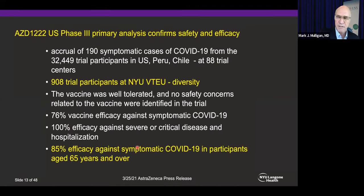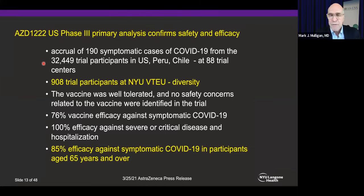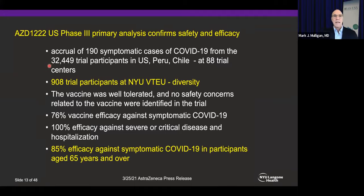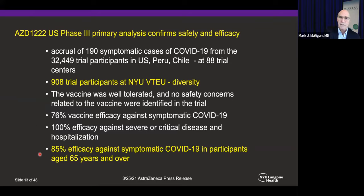Moderna results are almost identical. For AstraZeneca — another study we participated in — there were 190 cases in 32,000 participants at 88 trial centers. The vaccine was well tolerated with no safety signals in this trial of 32,000. There was 76% efficacy against symptomatic COVID, 100% against severe and critical disease, and in those over 65, 85% efficacy — a very effective vaccine.